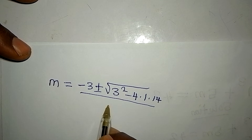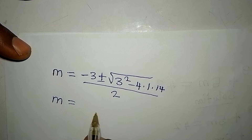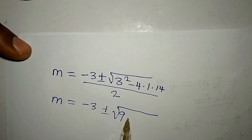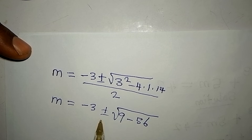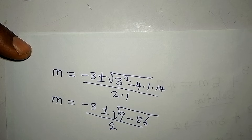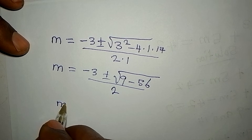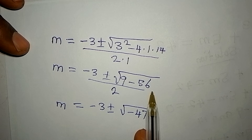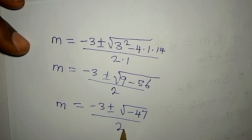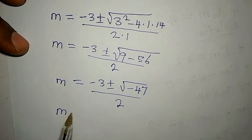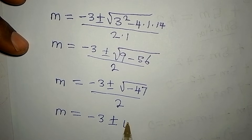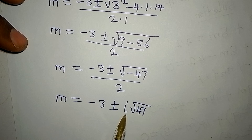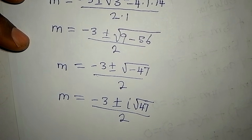Continuing: m = (−3 ± √(9 − 56)) / 2. That gives (−3 ± √(−47)) / 2. We bring out the negative from under the square root as the imaginary unit i, so we have m = (−3 ± i√47) / 2.